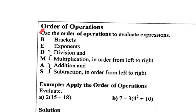Today we're going to be learning about the order of operations and how to use it to evaluate expressions. To remember the order of operations, there's a very useful phrase: BEDMAS. B stands for brackets, E stands for exponents, D and M stand for division and multiplication in order from left to right, while A and S represent addition and subtraction in order from left to right.